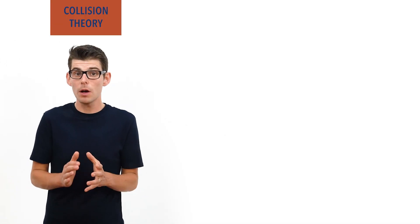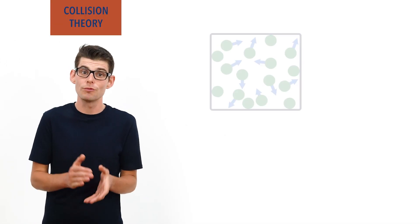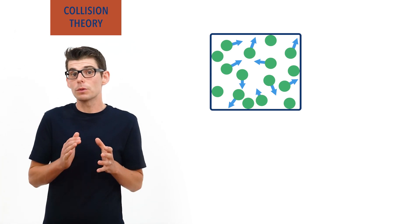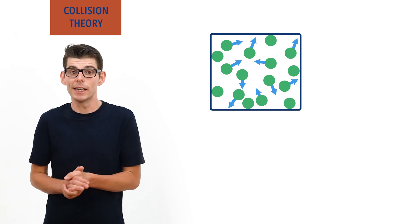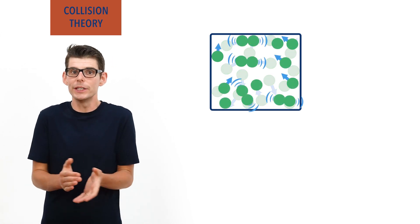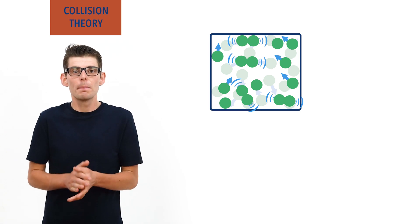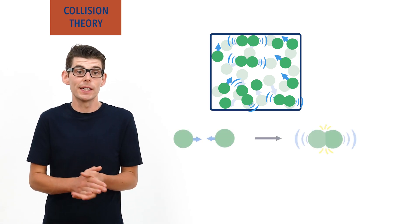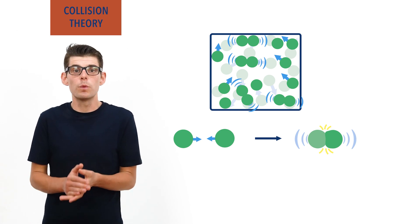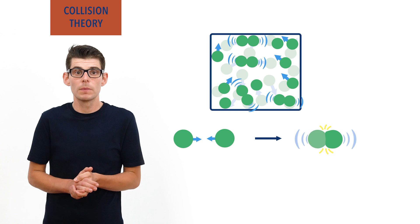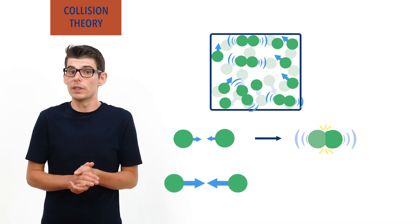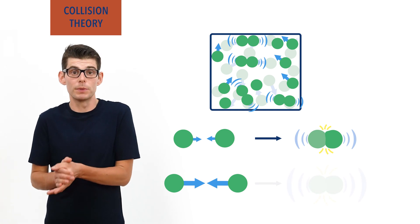In a gaseous system, particles are constantly randomly moving in all directions. As a result, the particles are constantly colliding and hitting each other. Just like with any two objects hitting each other, particles exchange energy when they collide. This energy comes from the speed with which the particles are moving. The faster two particles are traveling when they collide, the more energy that there is involved in the collision between them.